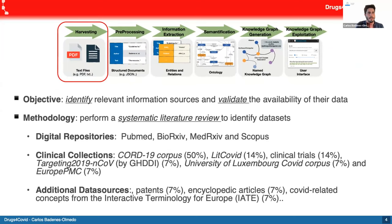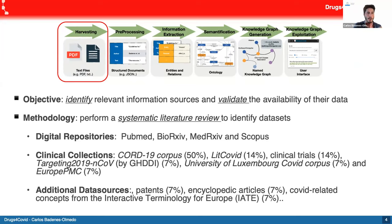Focusing on the first step, the objective is to identify relevant data sources and to evaluate the availability of the data. Our proposal is to perform a systematic literature review, taking into account the main concepts of the coronavirus, and then define the dataset — for example, from digital repositories such as PubMed, BioArchive, and so on — but also combining with other sources, such as clinical collections, the Lead COVID dataset, and additional resources like patents and encyclopedic articles from Wikipedia. All this data is organized in this first step.